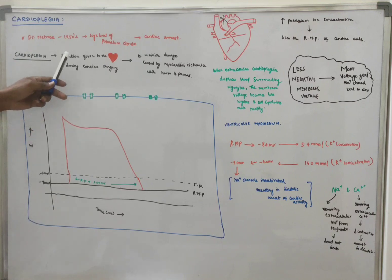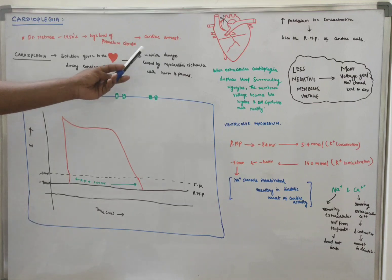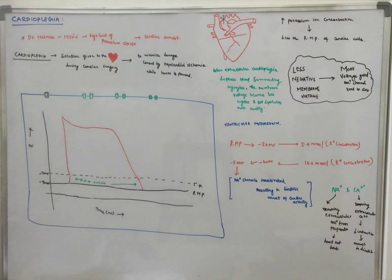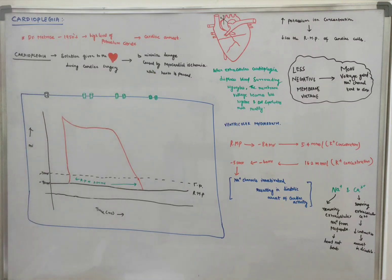The other definition is that Cardioplegia is a solution used during cardiac surgery. If you have a cardiac operation, you will get this solution. That solution is called Cardioplegia. That solution helps to minimize the damage caused by myocardial ischemia while the heart is paused. When you pause the heart, you will have reduced oxygen and metabolism.